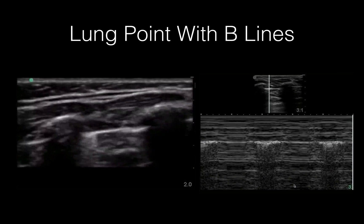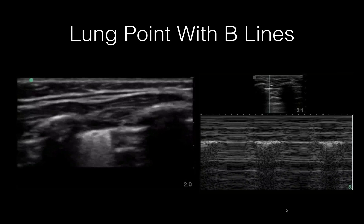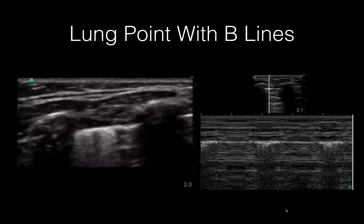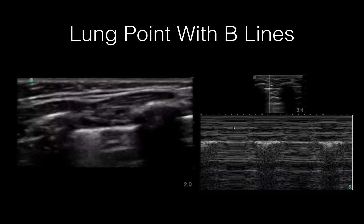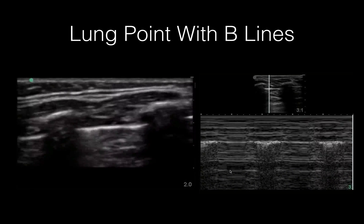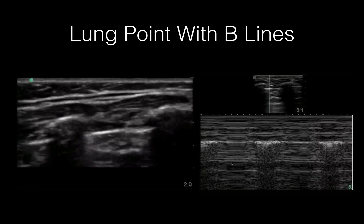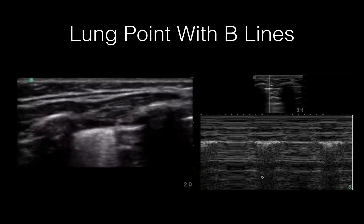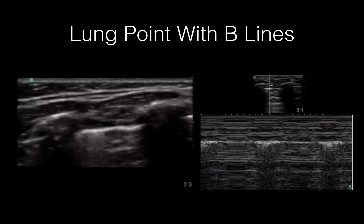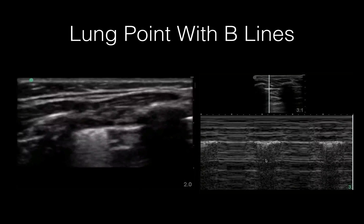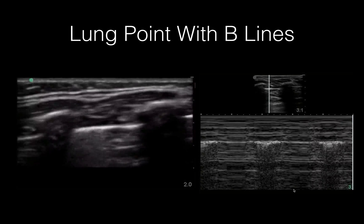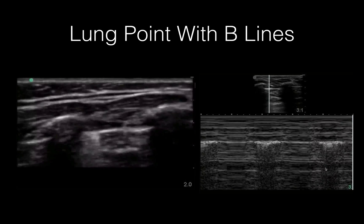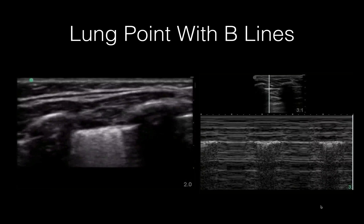Here's what it looks like when you compare M-mode. You see the stratosphere sign here — this is where you're not getting sliding. Then the lung comes in, and you get that nice waves-on-a-beach appearance. Then it comes out again — stratosphere sign, then waves-on-a-beach appearance.